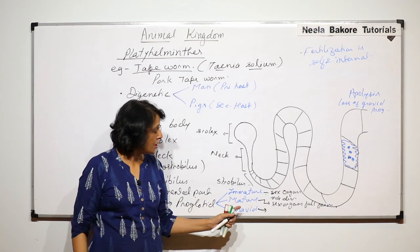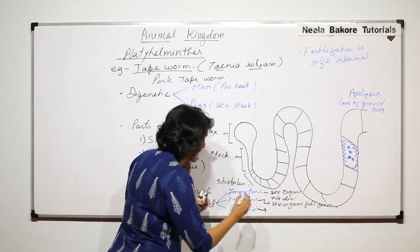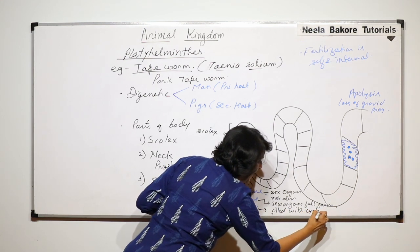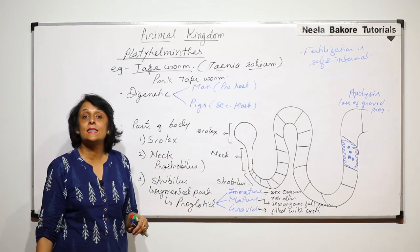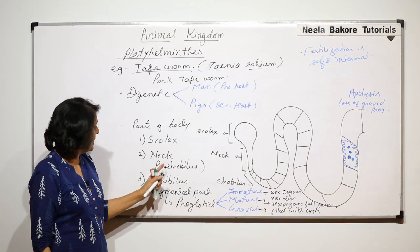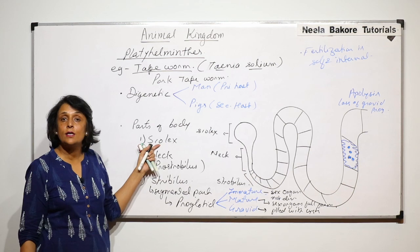And gravid proglotid is the one which has only the uterus, it is highly branched and it is filled with cysts. And these cysts get excreted out from our body along with the fecal matter.